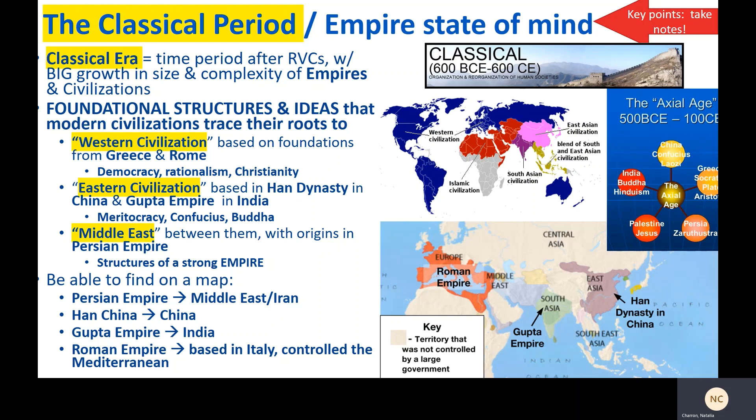In terms of what you need to be able to find on a map by the end of the unit: you should be able to locate the Persian Empire in the Middle East — modern-day Iran mostly — the Han Dynasty in China, the Gupta Empire in India, and the Roman Empire, which was based in Italy and then controlled all of the Mediterranean.